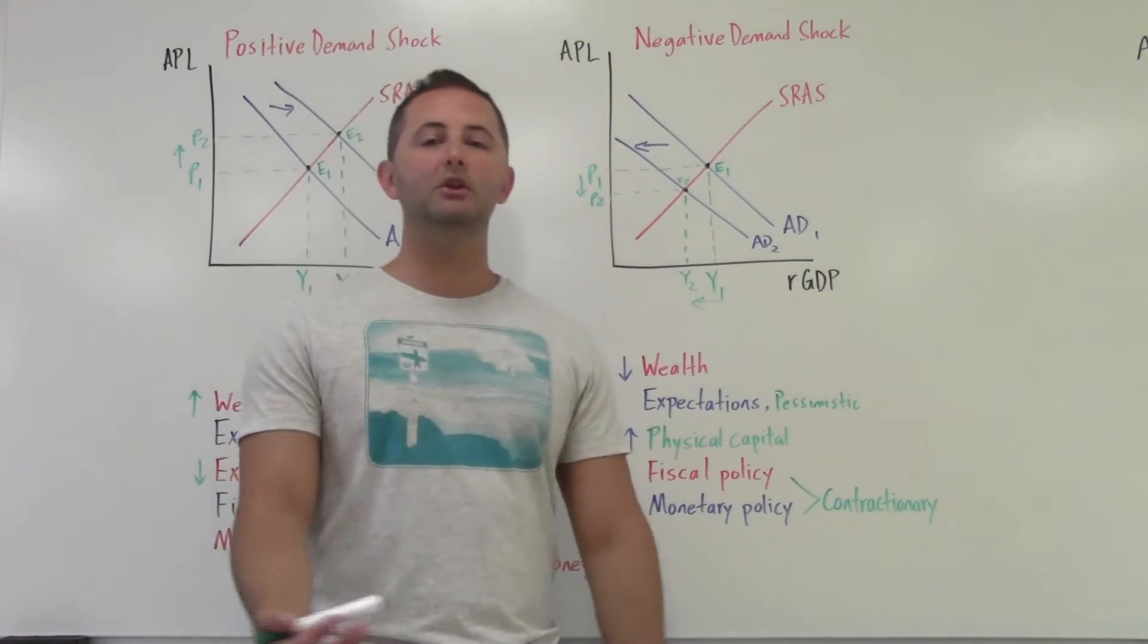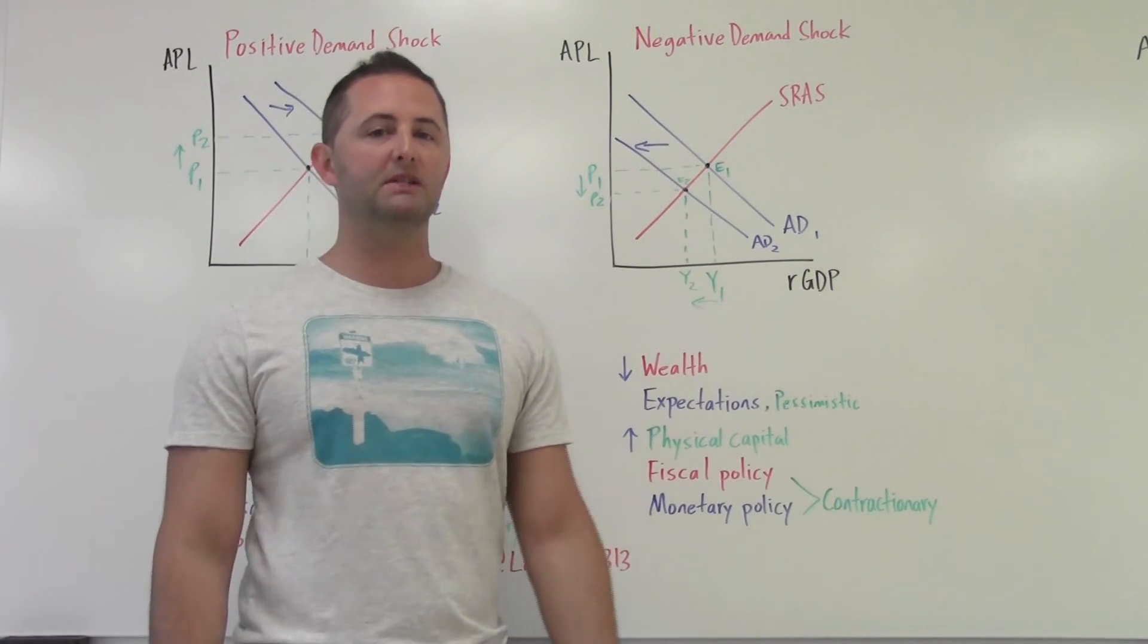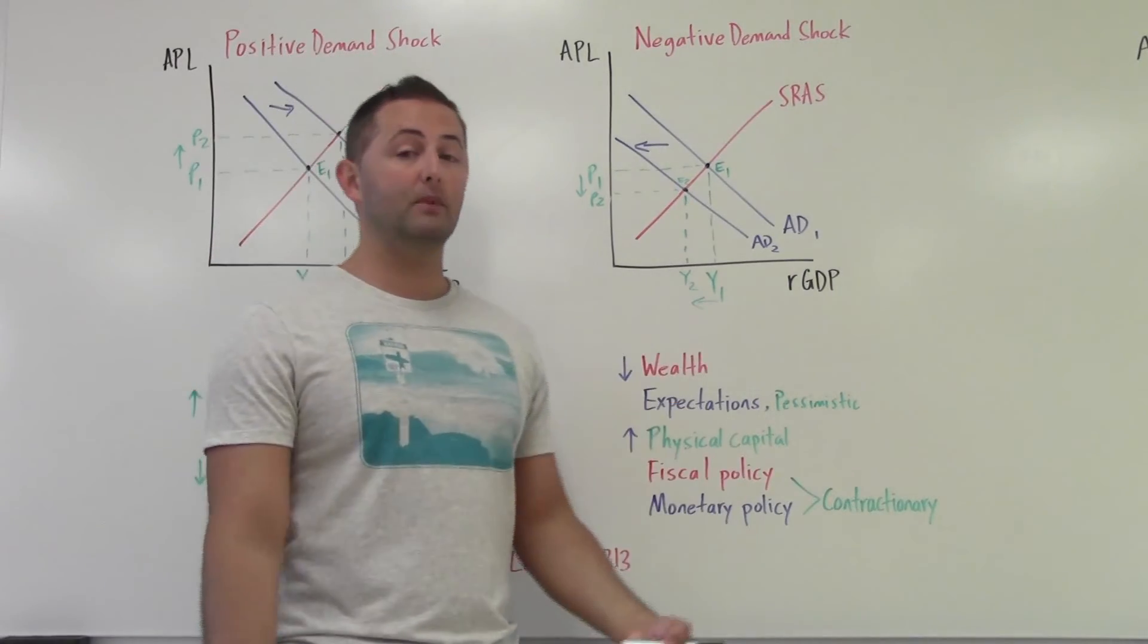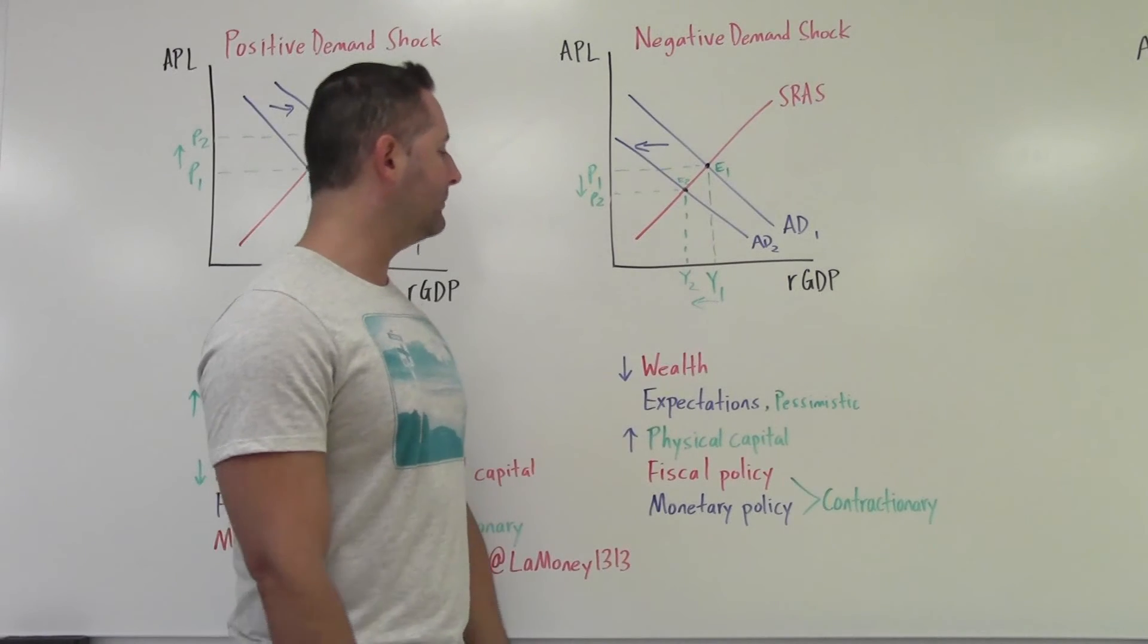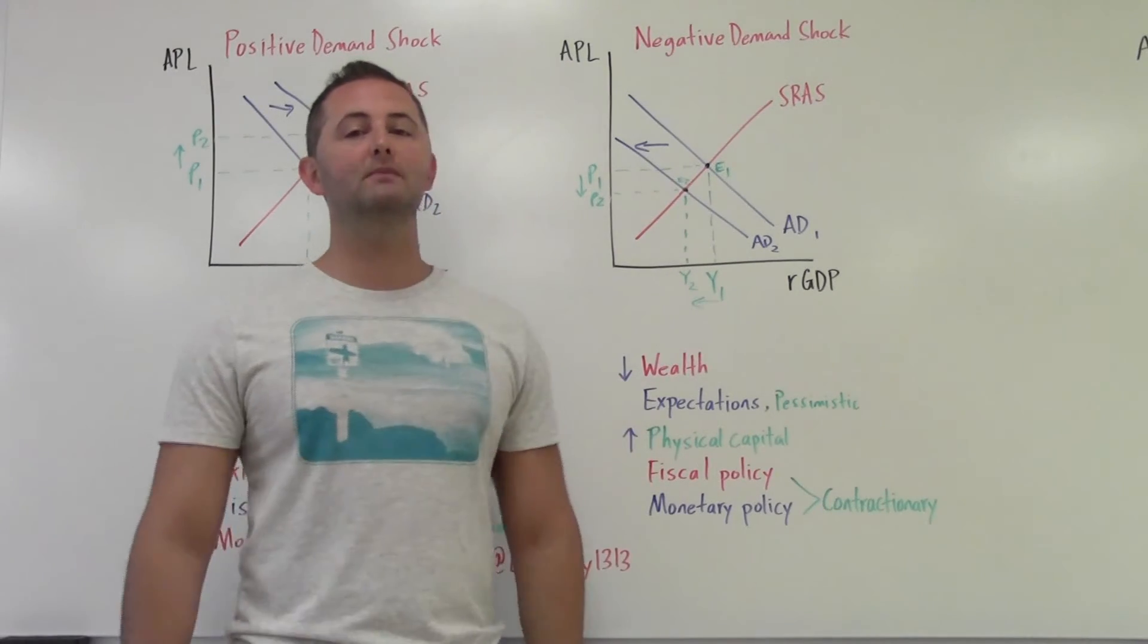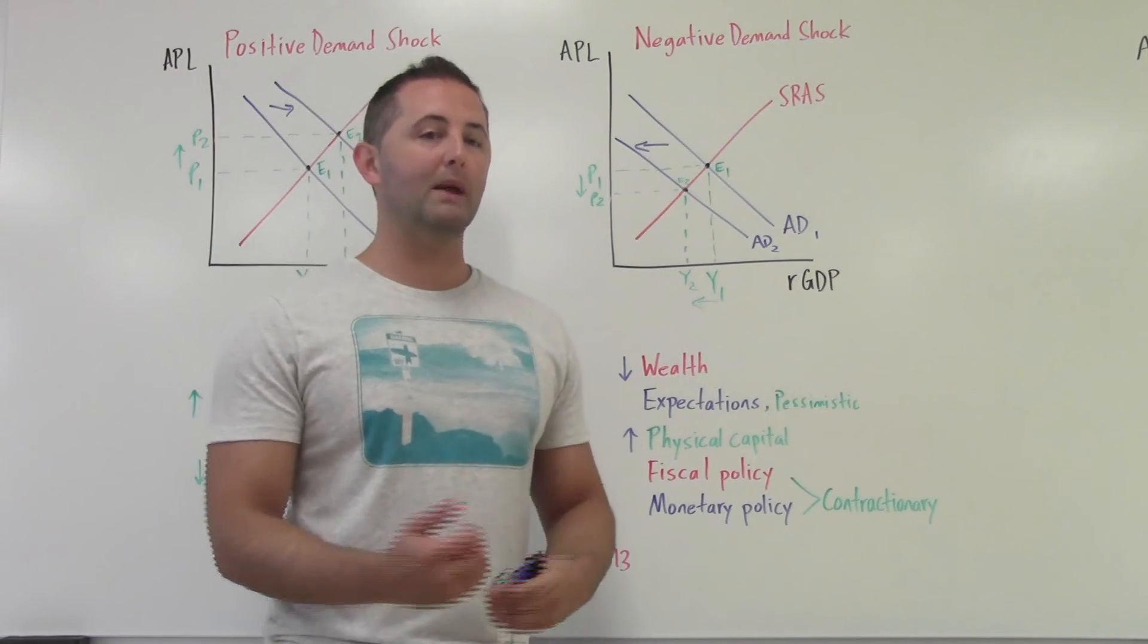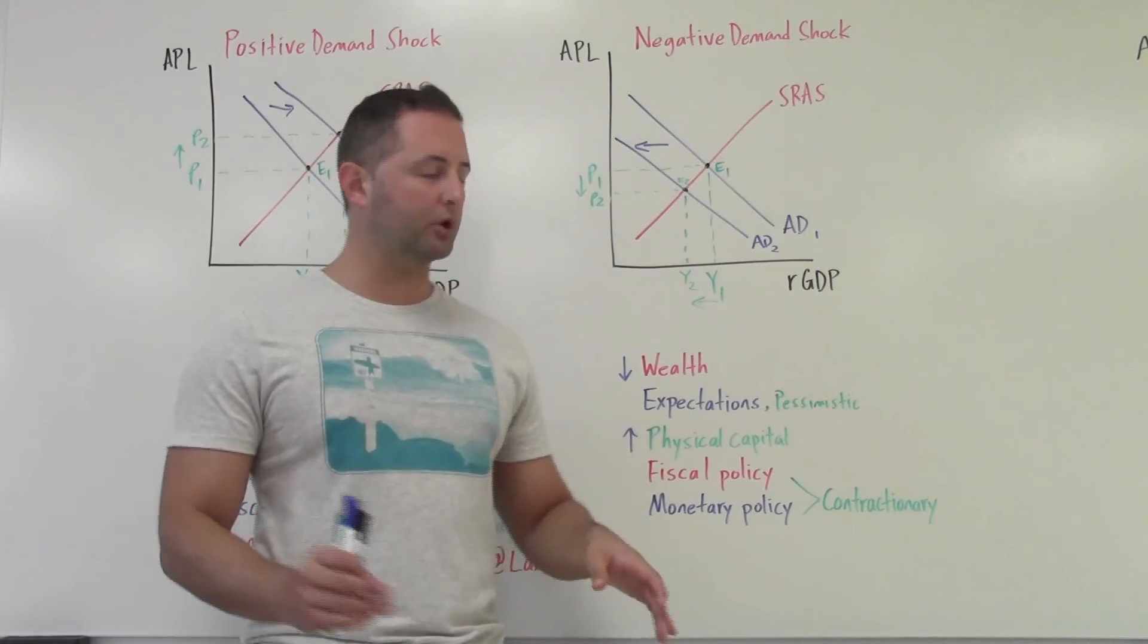Reasons that would cause this is a decrease in wealth. So home prices fall drastically, stock market crashes, people have less money, they don't want to spend as much because now we're nervous. We have less money, it's not a good time. So aggregate demand shifts to the left, decreases. If we have pessimistic expectations, so we are convinced the economy is going to get worse, we might decide to save our money. Again, this is economy-wide, not one person or one household.